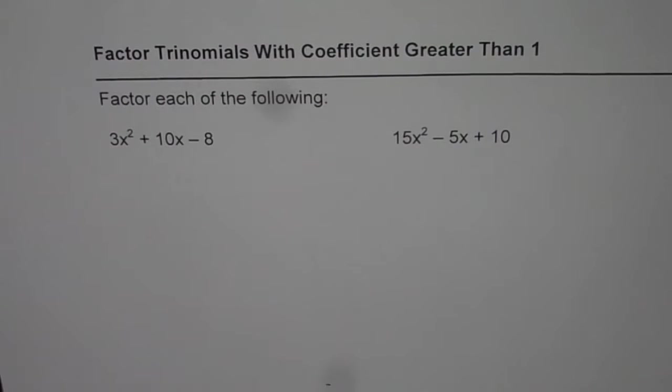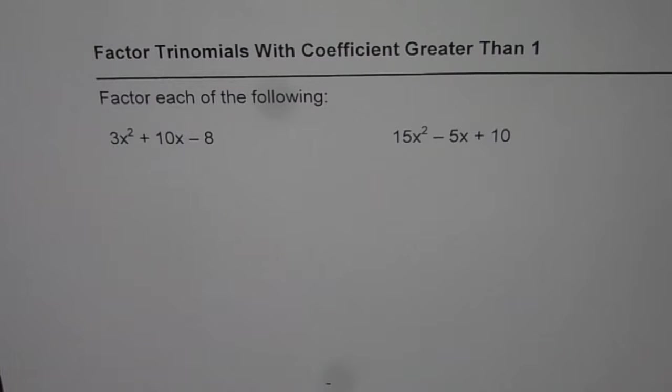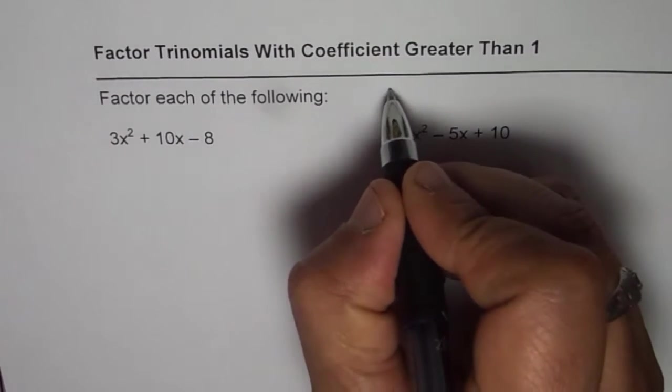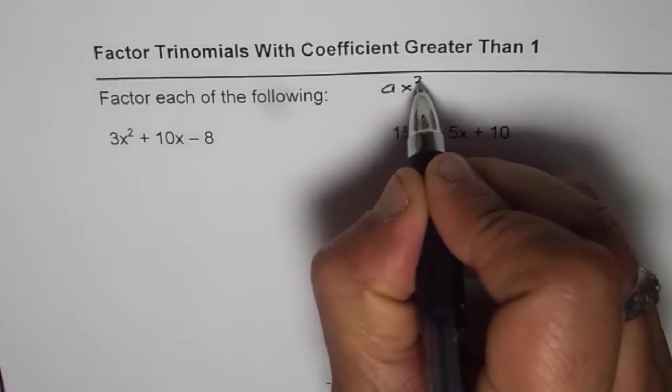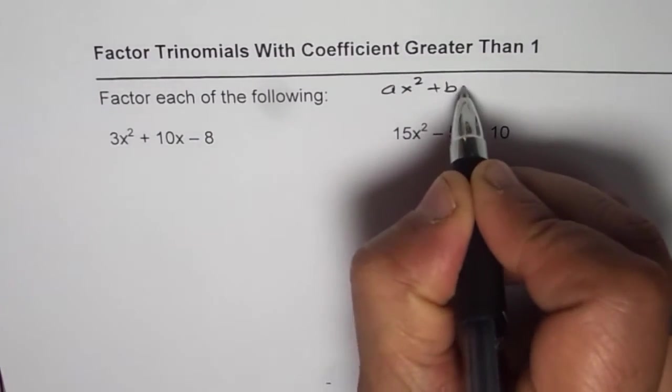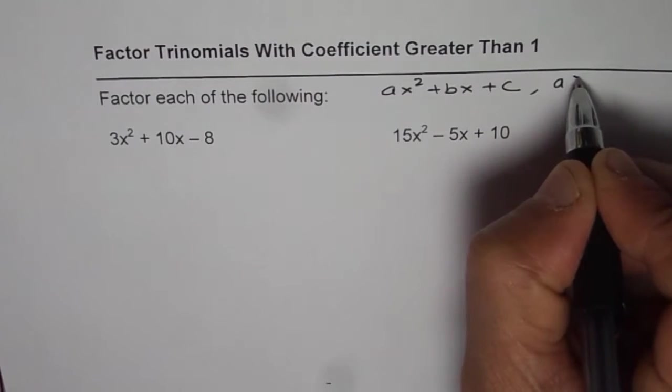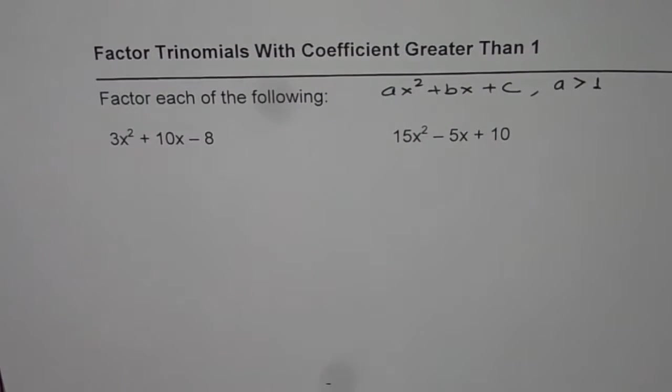I am Anil Kumar and in this video we will try to understand how to factor trinomials when the coefficients are greater than 1. That means the leading coefficient is greater than 1. So what I mean to say is normally we write quadratic equation as ax² + bx + c. So we are saying where a is greater than 1.